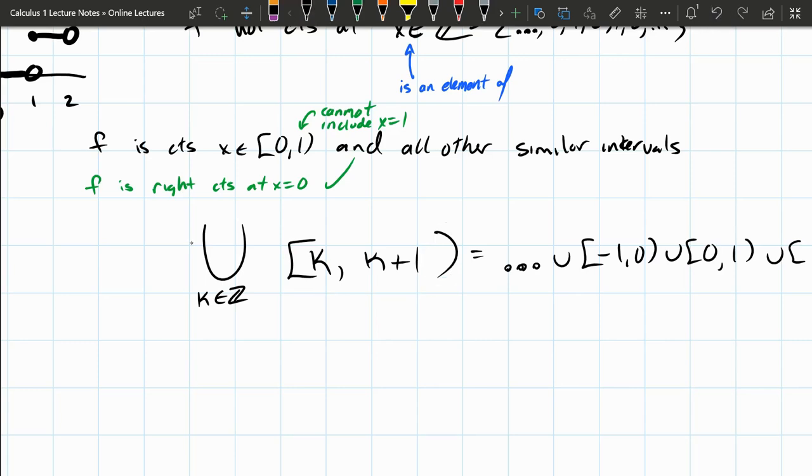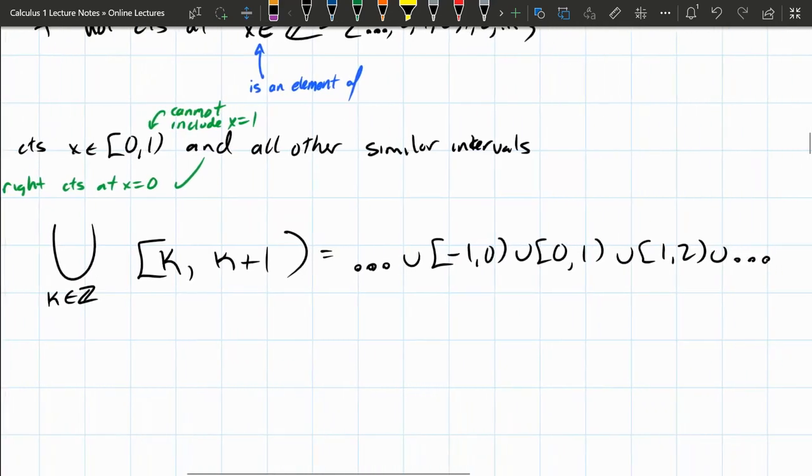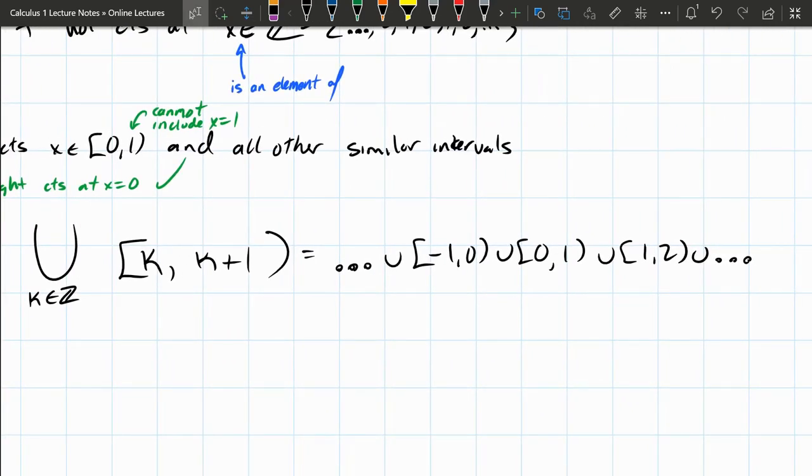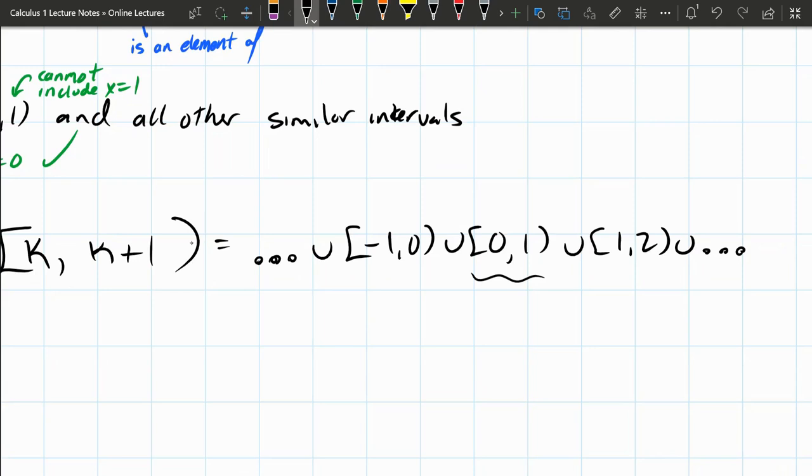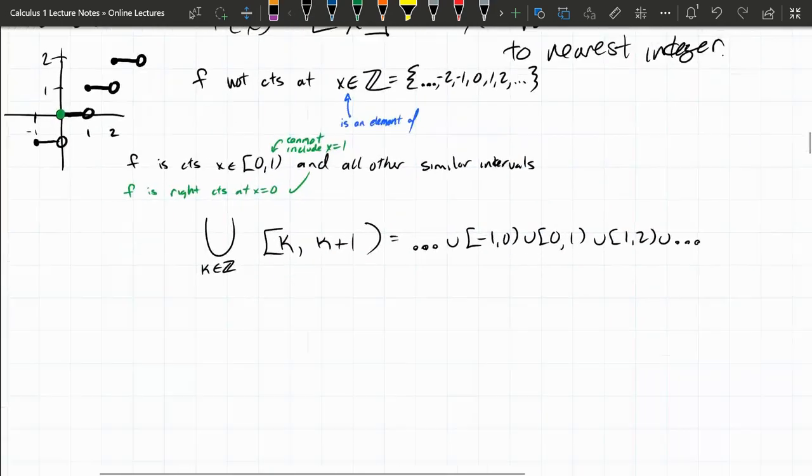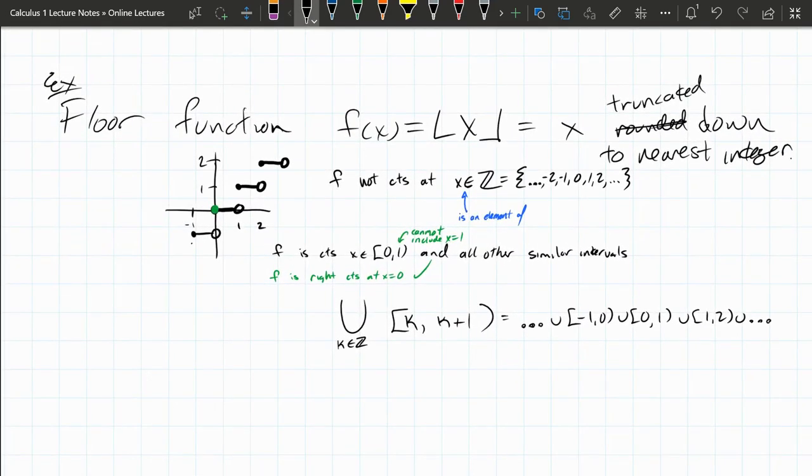And what's that equal to? Again, we're using the dot, dot, dot notation. So maybe we'll start in the middle here. 0 to 1, union, 1 to 2, etc. So next one would be 2 to 3, 3 to 4. And negative 1 to 0, union, negative 2 to negative 1, etc. So here's the floor function. It's sort of a simple function, but we can see where this function is continuous and not continuous. And those values are very easy to see.